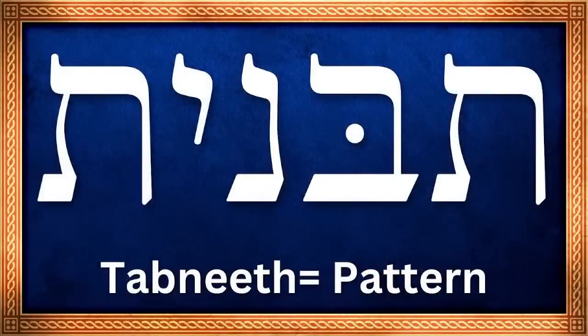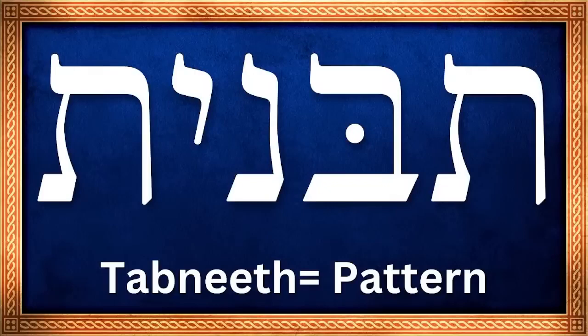This is the word tabnith in Hebrew. This is the word here in the book of Exodus chapter 25 verse 9, where God says to Moses: 'That is the pattern of the tabernacle and the pattern of all its furnishings' — the tabnith — 'just so you shall make it.'